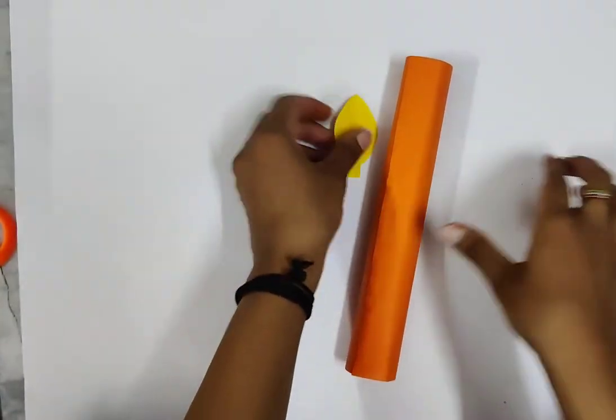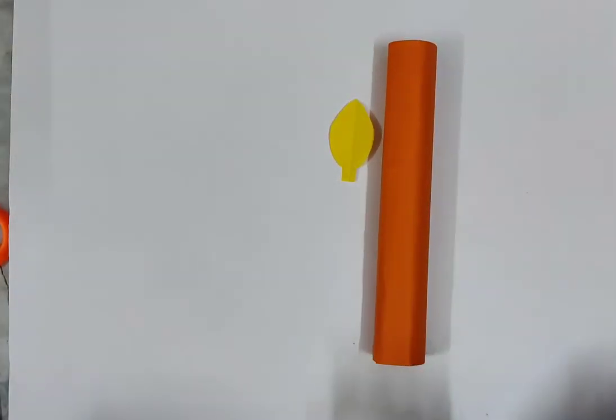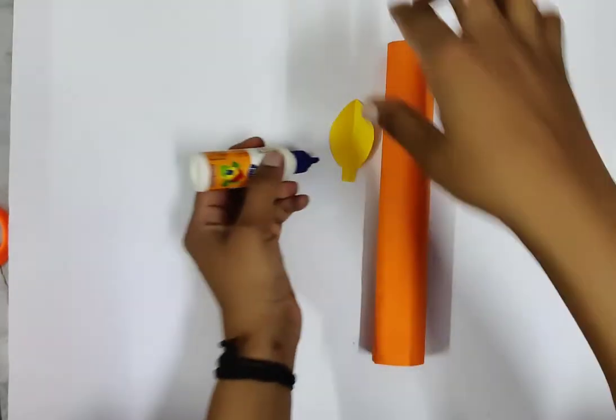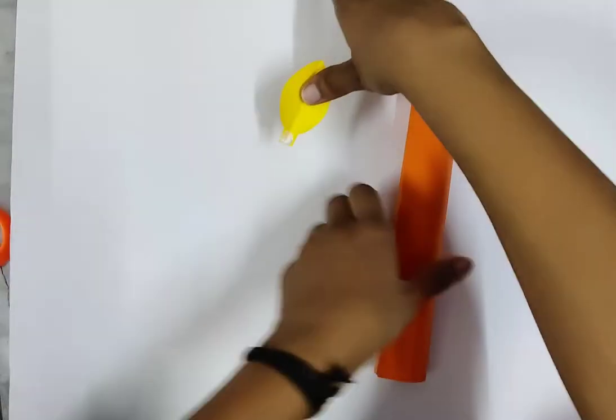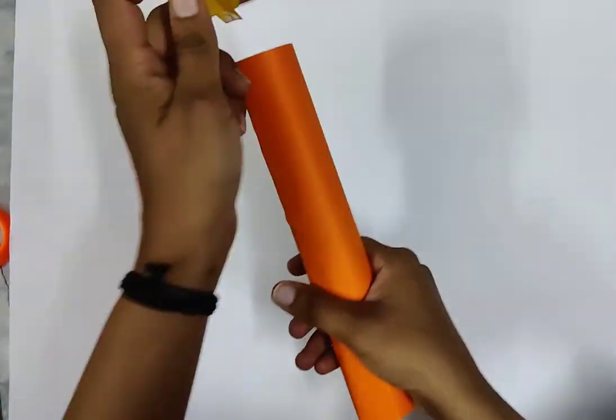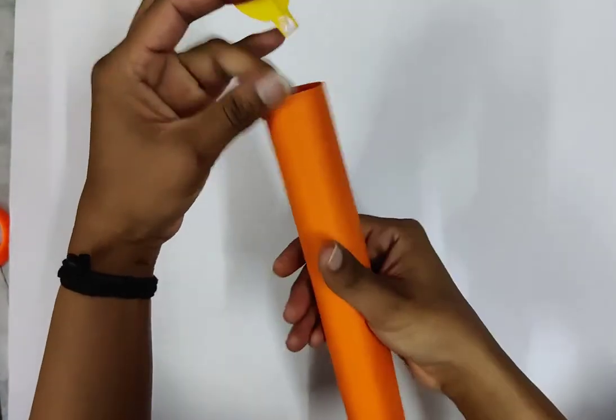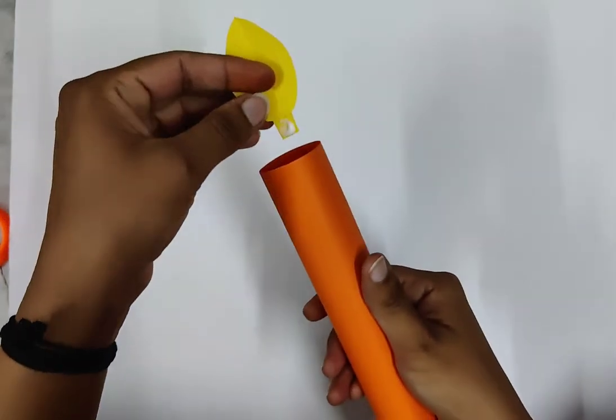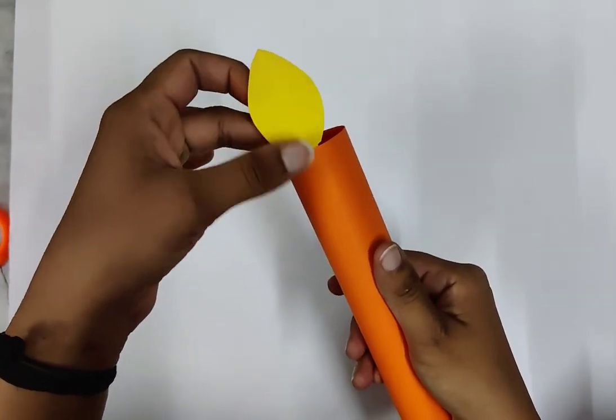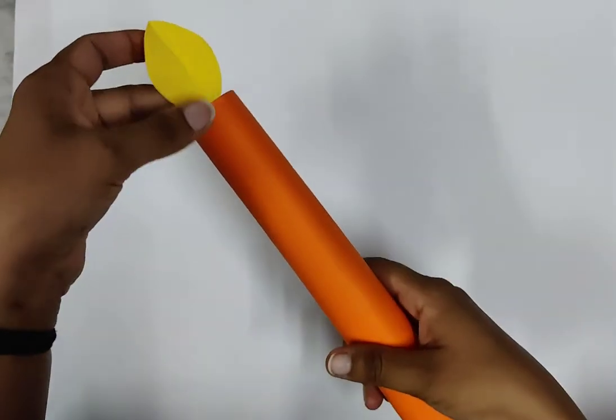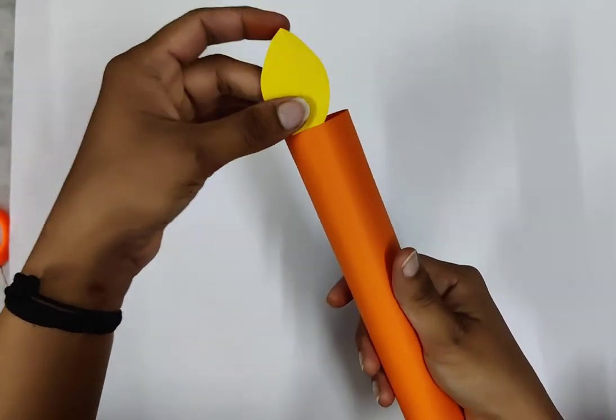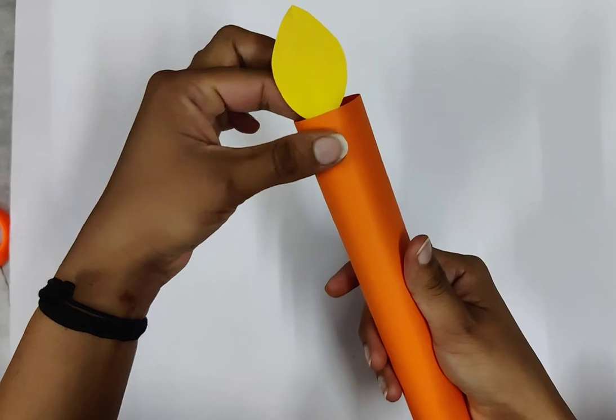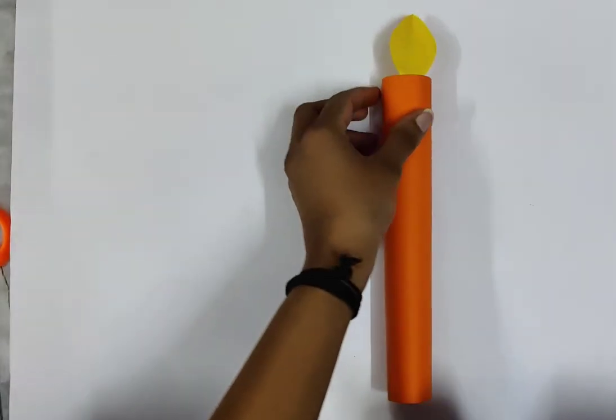Now take your fevicol, apply here, and in the last step you have to paste here. And this is your origami candle, it is ready.